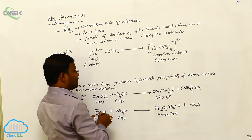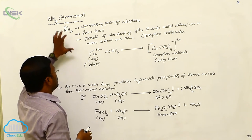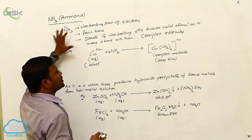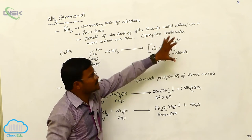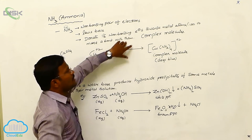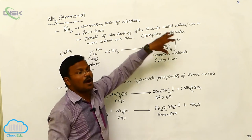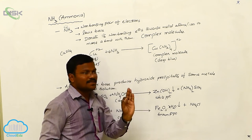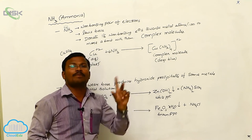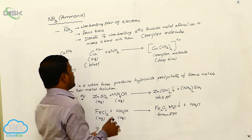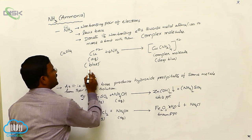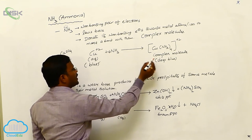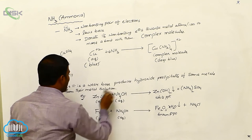The non-bonding pair of electrons donated by nitrogen towards metal atoms or metal ions forms complex molecules. The conversion of blue color into deep blue color indicates the presence of copper atoms in the complex molecule.